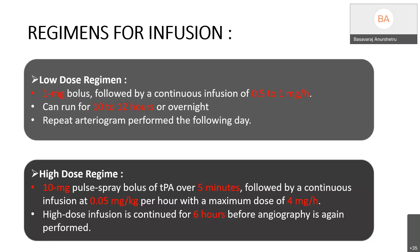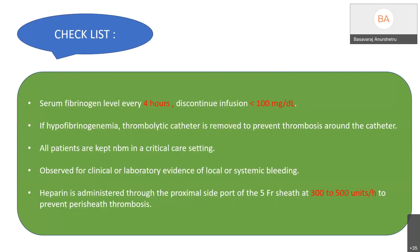The low-dose infusion can run for 10 to 12 hours or overnight, and a repeat arteriogram is performed the following day. The high-dose regimen uses a 10 mg pulse-spray bolus of TPA over 5 minutes, followed by a continuous infusion at 0.05 mg/kg/hour with a maximum of 4 mg/hour, continued for 6 hours before repeat angiography. Serum fibrinogen must be monitored every 4 hours and discontinued if below 100 mg/dL. If hypofibrinogenemia occurs, the thrombolytic catheter is removed. Anticoagulation with heparin at 300–500 units/hour is given via the proximal side port of the 5-French sheath to prevent pericatheter thrombosis.